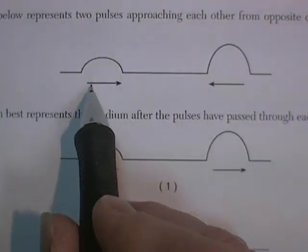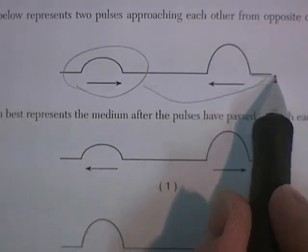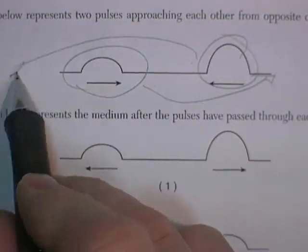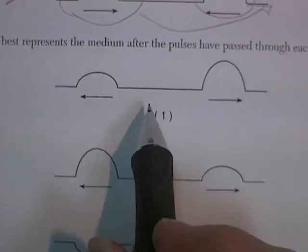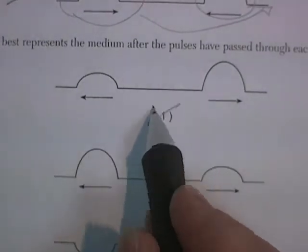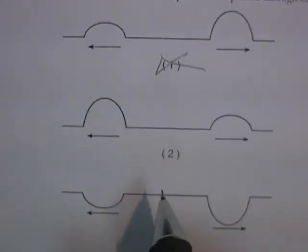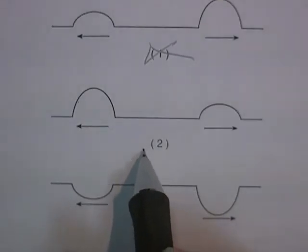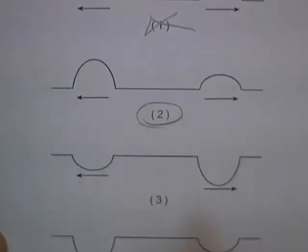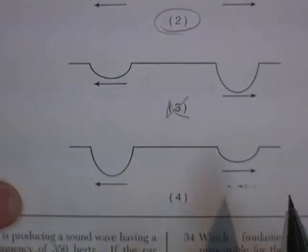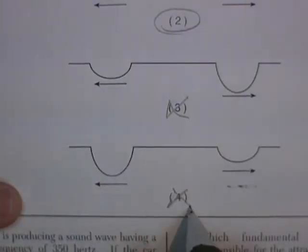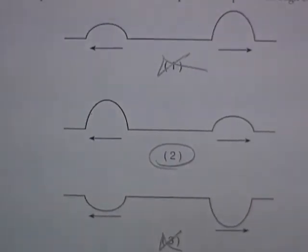Well, we want one where this pulse is on the other side. That pulse is over there. Picture one shows them basically bouncing off of each other. Picture two looks kind of like what we were hoping for. Picture three has them inverted, and picture four has them reversed and inverted. So, question two is right.